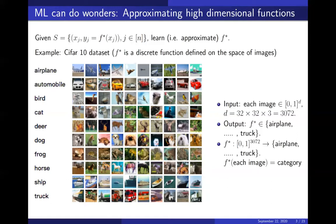A typical example is the well-known CIFAR-10 dataset, which consists of a collection of images labeled into 10 categories according to what's in the image — birds, cats, dogs, and so on. Each image is 32×32 pixels, which can be viewed as a point in a 32×32×3-dimensional space, where 3 is the dimension of color. So F* is a function defined on a 3072-dimensional space taking 10 discrete values.